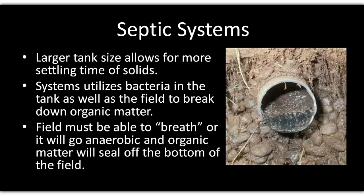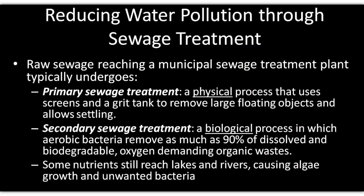Here's a slide of what the drain field looks like after it has failed. You can see the drain tile line, the gravel below it, and the sand below that. There is organic matter present because the system has gone anaerobic — meaning it's no longer breathing — and eventually it seals off and fails. All systems eventually do this. To summarize: primary sewage treatment is a physical process removing solids, and secondary treatment is biological, breaking down organic material through an anaerobic process.